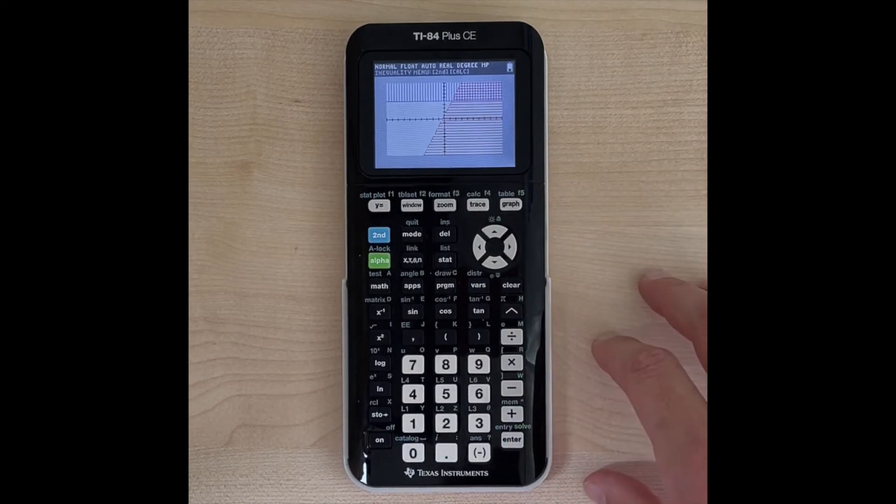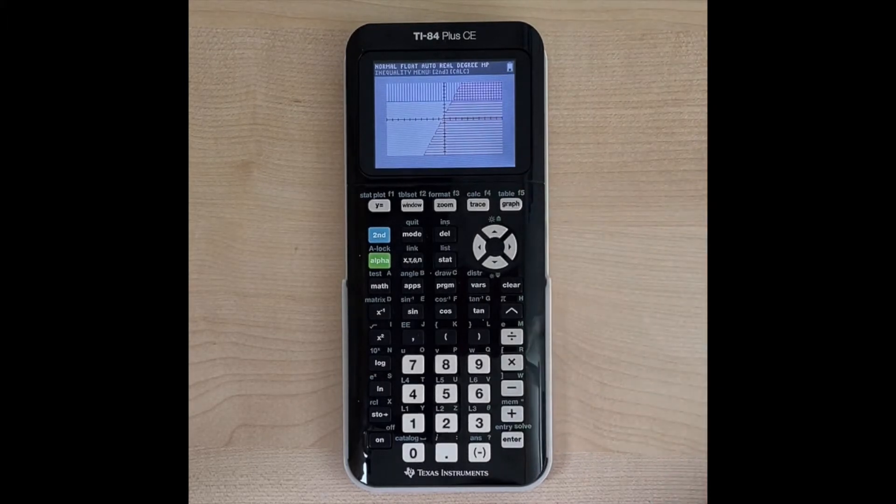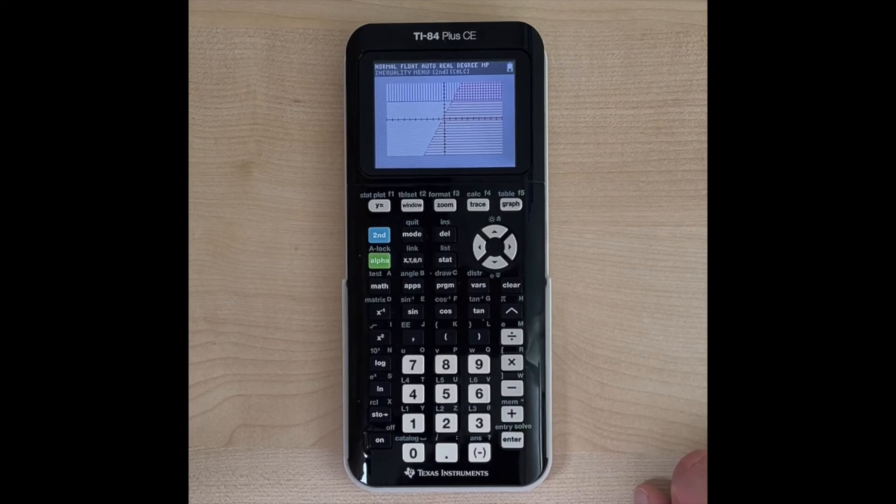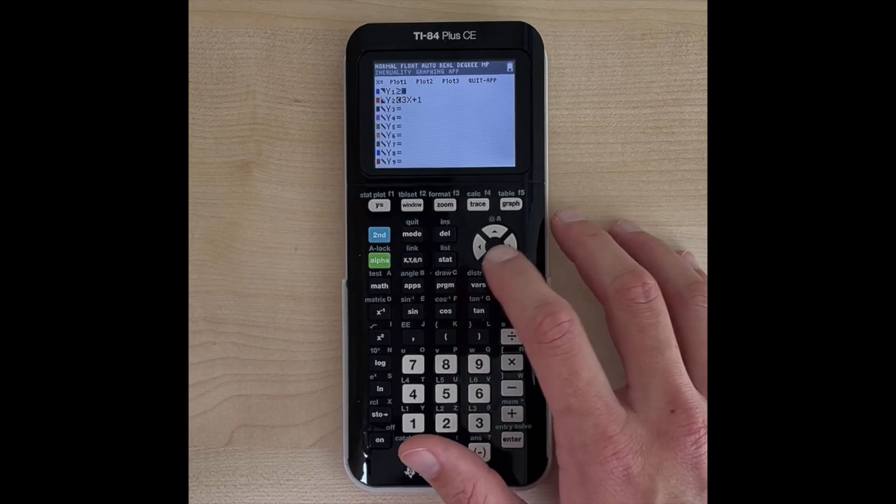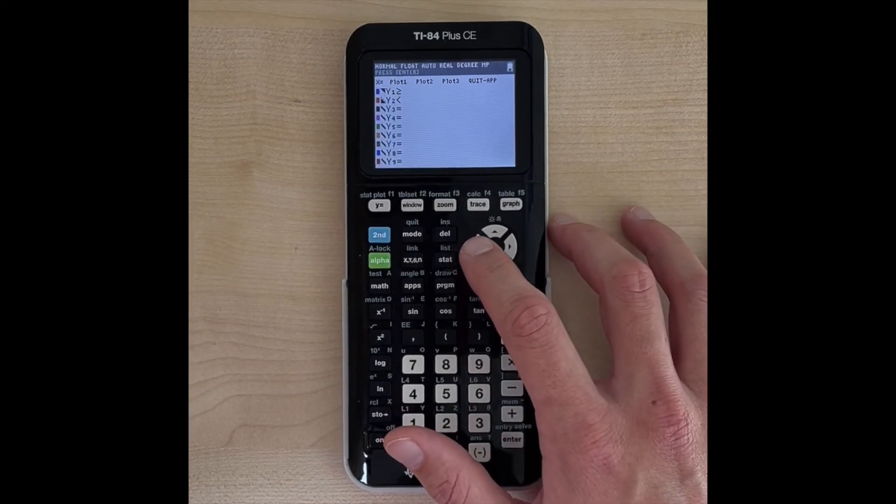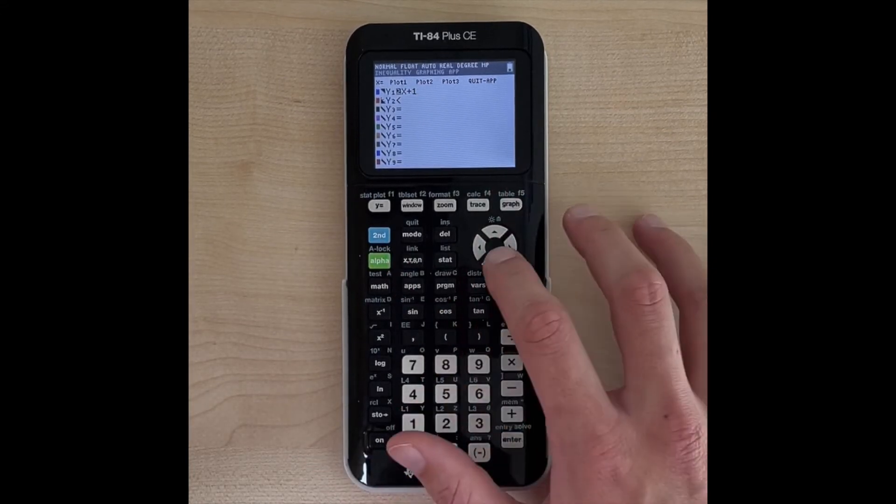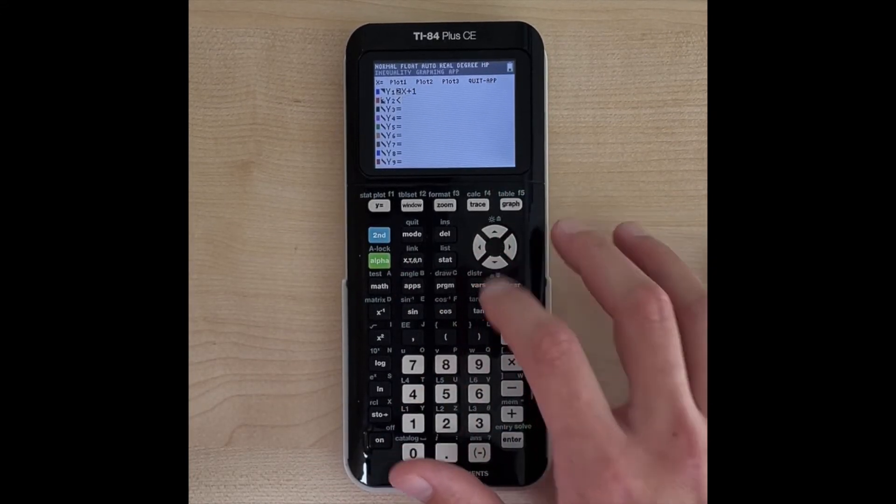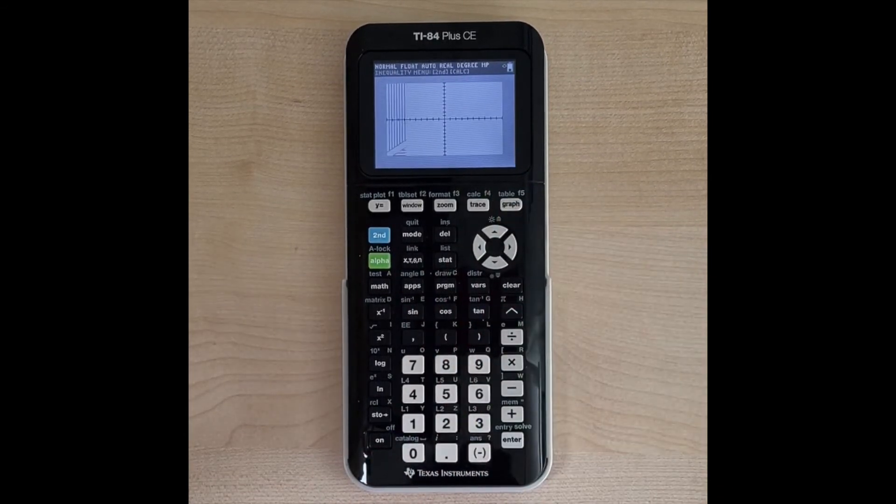So we still have to be able to replicate this on paper or choose this option on the computer just depending on how the question is displayed to you. So let's graph one more. Let's go back to y equals, and let's clear this, and let's graph y is greater than or equal to x plus 1, and y is less than x minus 1. So now let's take a look at what this one looks like.